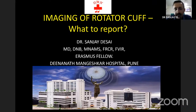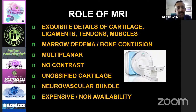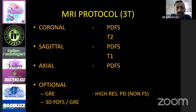Everybody has different ways to look at the rotator cuff. MRI basically provides explicit details of all the cartilaginous elements, ligaments, tendons and muscles. It provides information about marrow edema and bone contusions which no other modality can. It's multi-planar, no contrast is required, it gives information about unossified cartilage, neurovascular bundles — however it is expensive and not readily available.